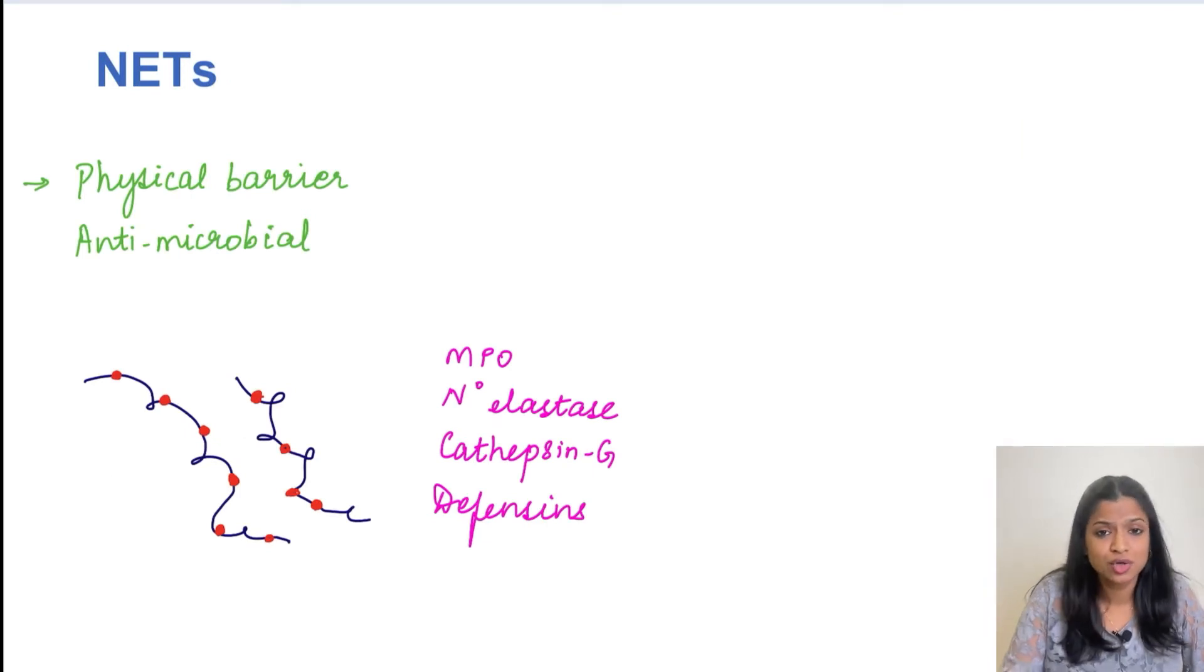So what is the function of this neutrophil extracellular trap? Firstly, it is going to form a trap so that it is going to contain the spread of the infection. So it is a physical barrier in the first place.